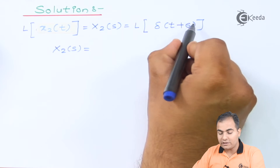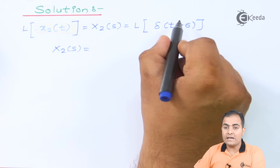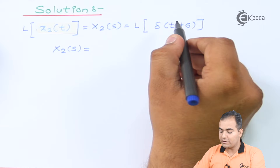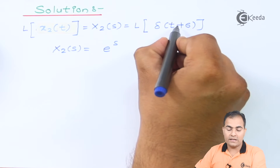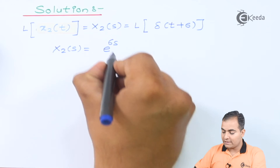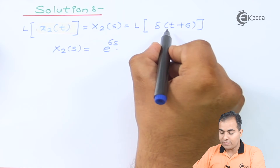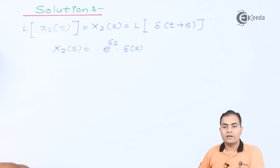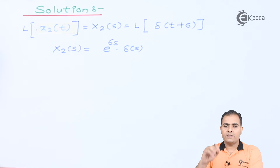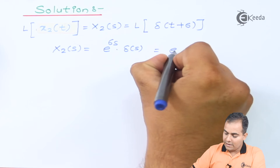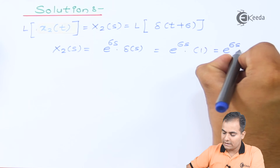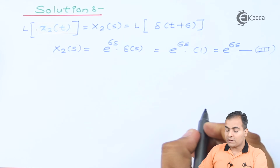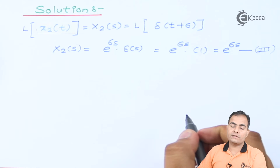Since δ(t) is advanced by 6, the +6 is multiplied with s placed in the power of the exponential term: e to the power of 6s, multiplied by the Laplace transform of the input function δ(t), which is δ(s) = 1. So e^(6s) × 1 = e^(6s). This is Equation 3.